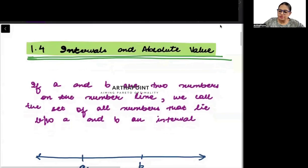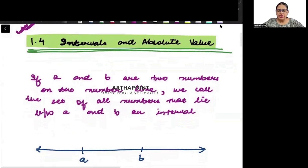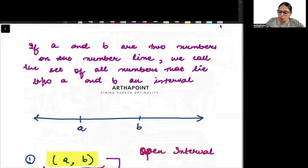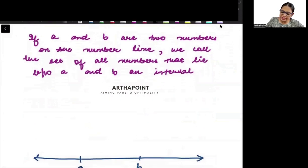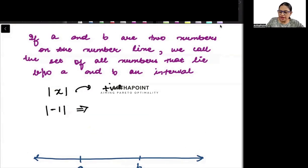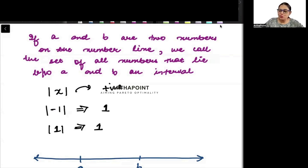In today's lecture we will talk about absolute value. We have already studied all kinds of inequalities. Today I want to start our focus on what is absolute value. Maybe all of you have already heard about absolute value — whenever you have anything in mod you always get a positive answer. If I find mod of minus one I get one, and mod of one I also get one. But today I want to define absolute value in an absolutely new way: absolute value is basically the distance between two numbers.